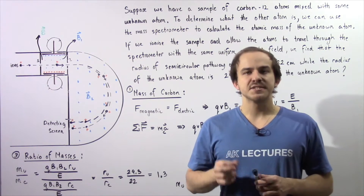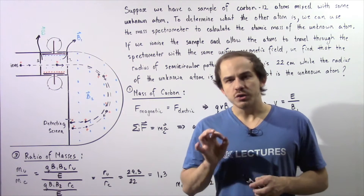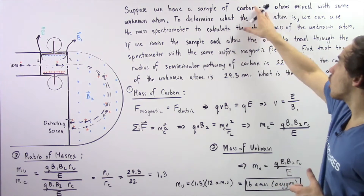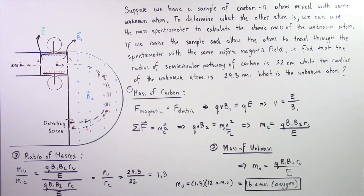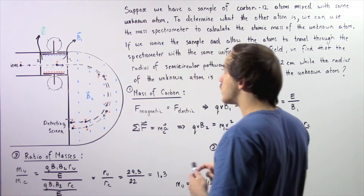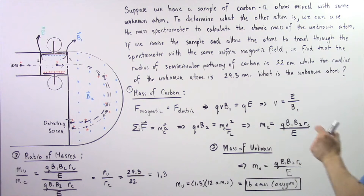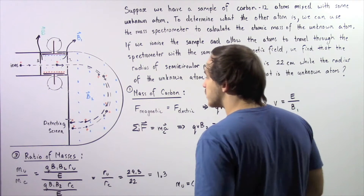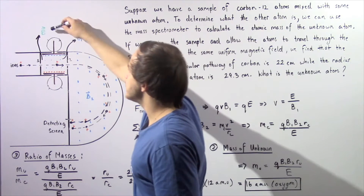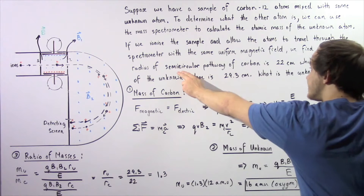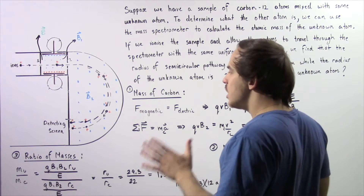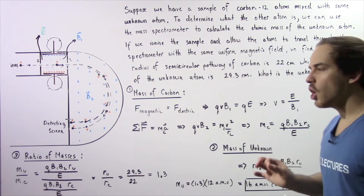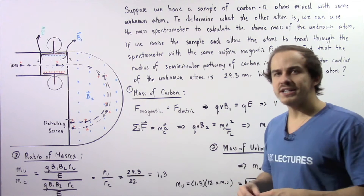Let's examine an example that deals with mass spectrometers. Suppose we have a sample of only two types of atoms: a carbon-12 atom and some other unknown atom. We want to determine what the other atom is using a mass spectrometer. The radius of the semicircular pathway of the carbon atom is 22 centimeters, while the radius of the unknown atom is 29.3 centimeters. Using that information, we want to calculate the mass of the unknown atom and then use the periodic table to determine what atom it is.